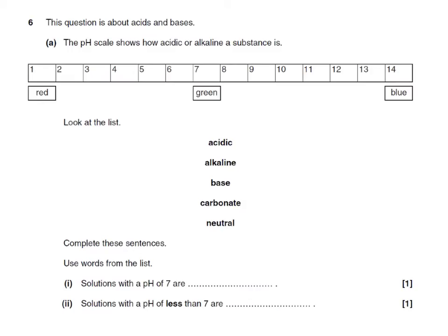This question is about acids and bases. The pH scale shows how acidic or alkaline solution is. So here at pH 7 we have universal indicator would be green whereas as we go further towards 14 blue colours and further towards 1 red colours.